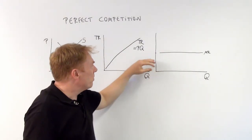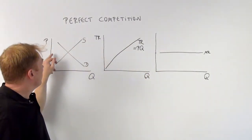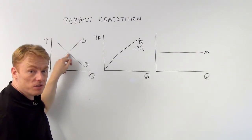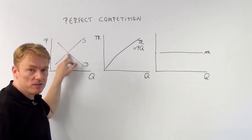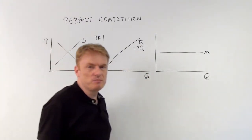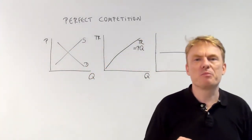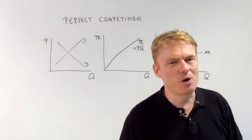So marginal revenue is at that same height, which can be considered as the point of intersection between the demand and supply curves. That's important to know about perfect competition. Thank you for watching.